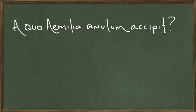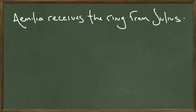My students are required to answer in Latin. If they can't, we put the English sentence on the board, because they typically know the English answer, and then we analyze it, diagram it, and turn it into Latin. Amelia receives the ring from Julius. They may know this, but they may not know how to say this in Latin.